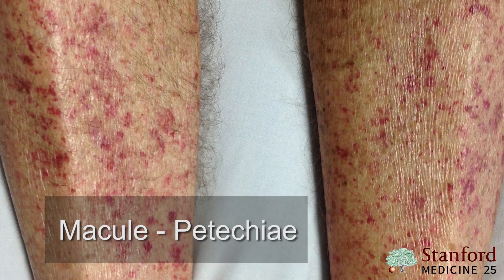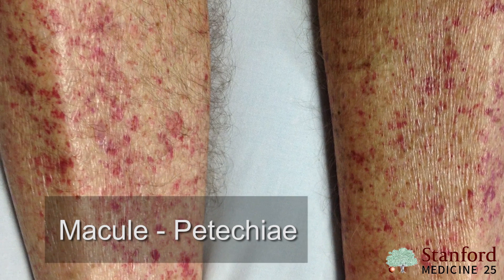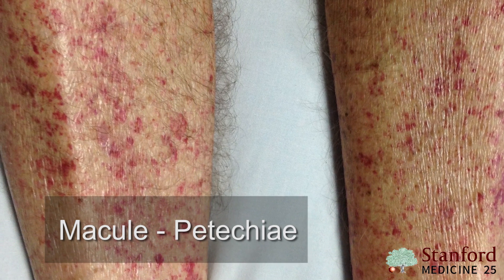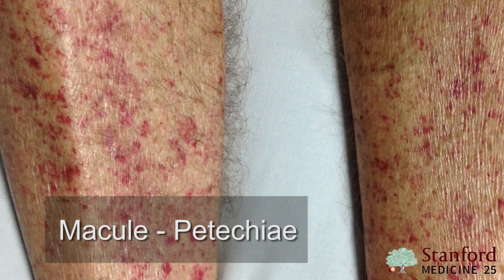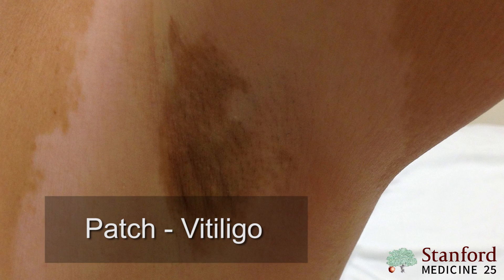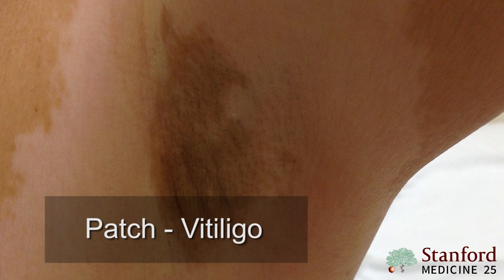A macule is a non-palpable, less than 1 cm lesion, and a petechiae is an example of a macule. If you were to take a macule and increase its size to greater than 1 cm, we would have a patch. Vitiligo is a perfect example of a patch.